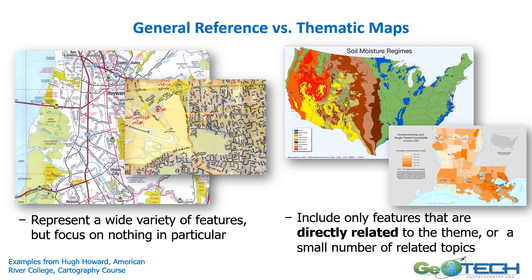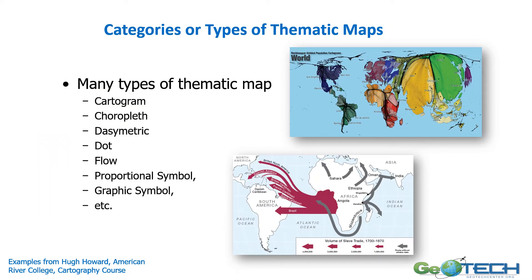Here are two examples. The one on the left represents a type of map that includes all features in an area — we often see this as a road map, where nothing in particular is emphasized but everything within that region is shown. On the right, a very different type of map that includes features only directly related to the topic, such as soil moisture — it weakly outlines states and water bodies but emphasizes the soil moisture content. Different types of maps are used for different audiences and topics, such as a cartogram or a flow process diagram.